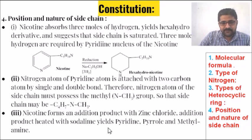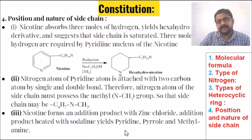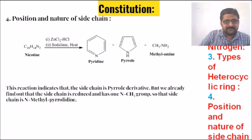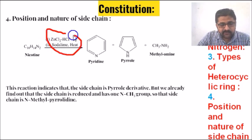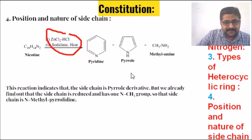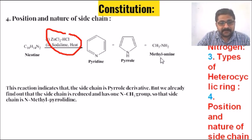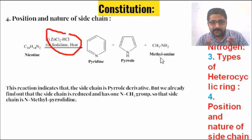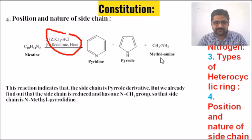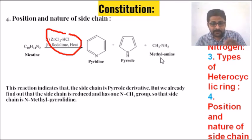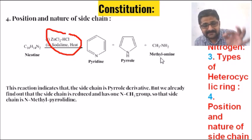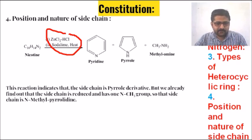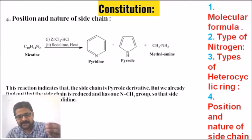Nicotine reacts with zinc chloride and soda lime on heating to yield pyridine, pyrrole, and methylamine. This reaction indicates that the side chain is a pyrrole derivative. But since we already established there is one N-methyl group, the side chain is N-methylpyrrolidine.